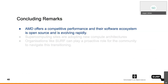I wanted to give a glimpse of AMD GPU architecture, the software ecosystem, how you can compile your codes, and how you can program on AMD GPUs. My concluding remarks are that AMD offers very competitive performance and their software ecosystem is open source and evolving rapidly. The GCN assembly instructions are open source rather than closed, which has a lot of advantages. Supercomputing sites are now open to adopting new compute architectures — you might see supercomputers with ARM CPUs, such as the EPI project (European Processor Initiative), or with Intel or AMD.